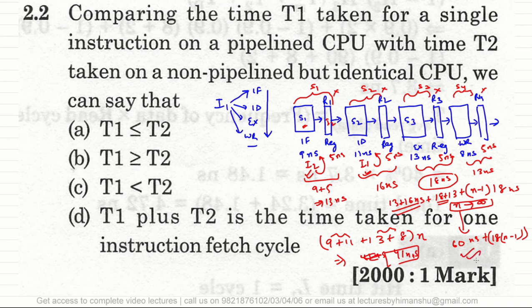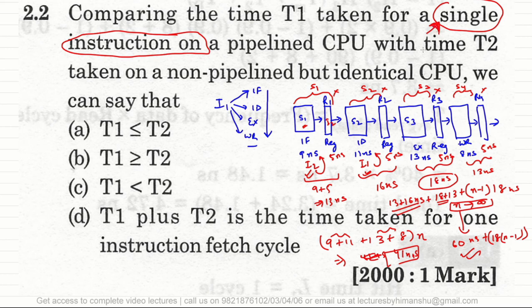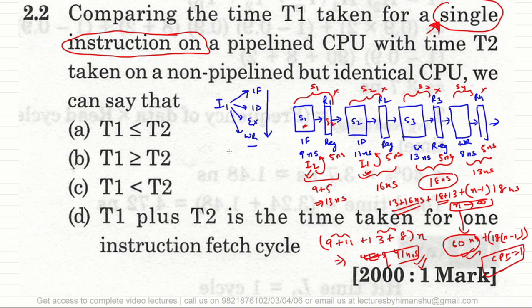However, the keyword in this question is 'single instruction.' For just one instruction, pipelining takes about 60 nanoseconds while non-pipelined takes only 41 nanoseconds. So the non-pipelined processor performs better for a single instruction. Therefore, the answer is option B: t1 ≥ t2. We use pipelining to make CPI equal to 1 for multiple instructions.